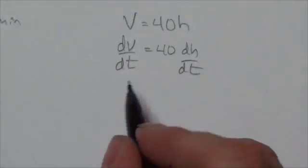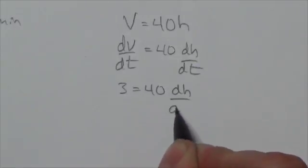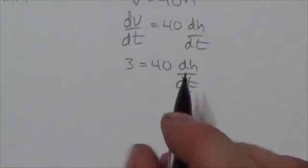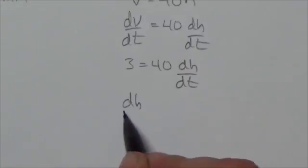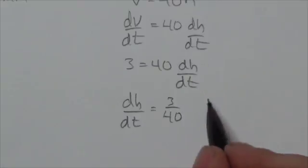We already know that dV by dt is going to be 3. And so now I'll bring the dh by dt over to the left-hand side because I know most of us like to have it on that side. And so this will be 3 over 40.